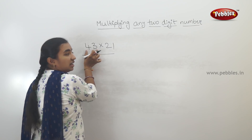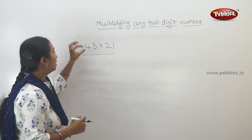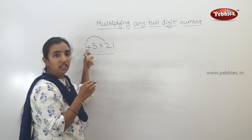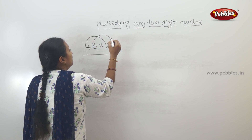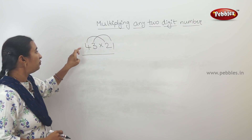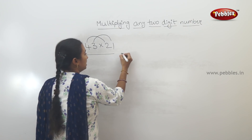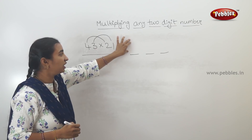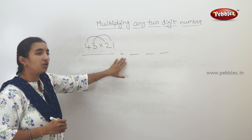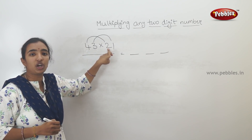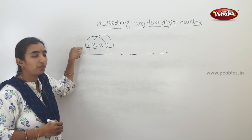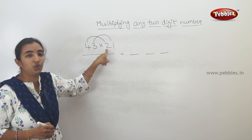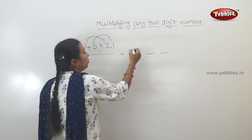Let's do this shortcut. First, we look at the first group. The first group is 4. The first number is 4.